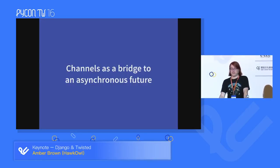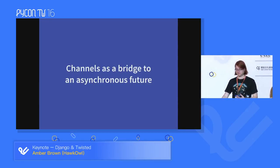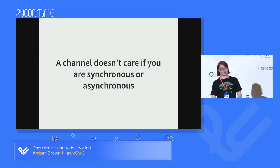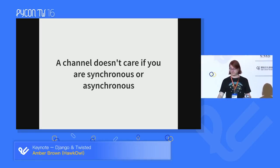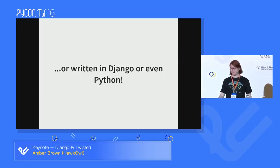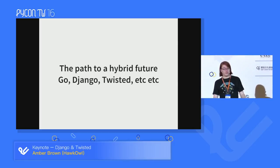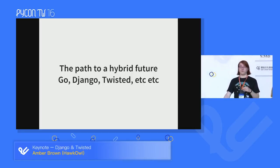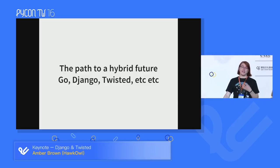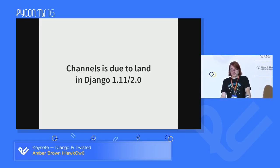Channels is a bridge to a more asynchronous future. It doesn't care if you're synchronous or asynchronous because everything goes through that main task queue. It doesn't even care if you're written in Django or in Python at all. Channels is an implementation of something called the Asynchronous Server Gateway Interface (ASGI), and it's entirely possible to write an ASGI server, client, or whatever in any language, platform, or operating system you want. Channels is due to land in Django 1.11 or 2.0, and you can try it out now.